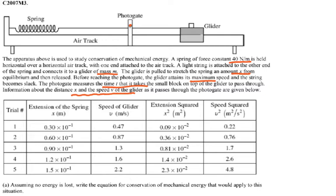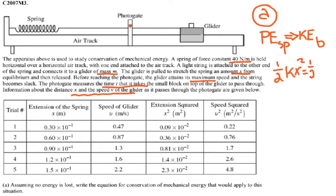So for A they ask, assuming no energy is lost, write the equation for conservation of mechanical energy that would apply to this situation. So for A I could say I have potential energy of the spring when we stretch the mass, go into the kinetic energy of the block when it passes over the photogate. So I have one half kx squared is equal to one half mv squared. And v is the maximum velocity of the mass when it passes the photogate.